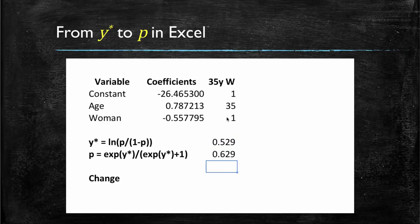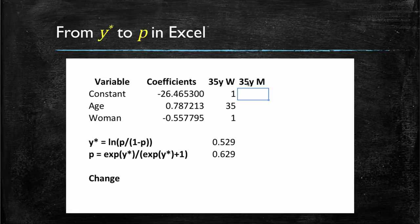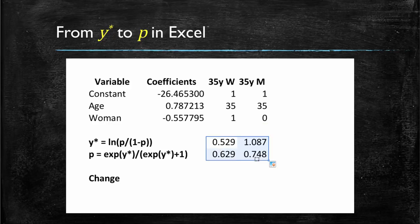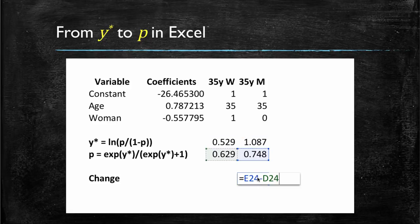Let's now investigate how things change if rather than having a woman, we had a man — a 35-year-old male. We have 1, 35, and now we turn off the woman dummy variable. Note that the probability now has increased from 62% to 74%. Specifically, we have an increase in the probability of 11.9 percentage points.